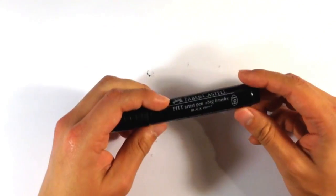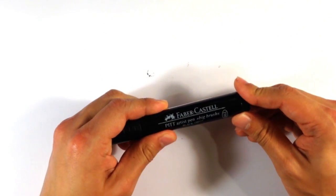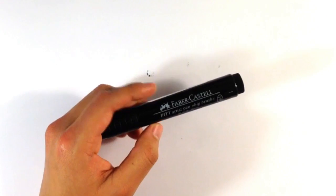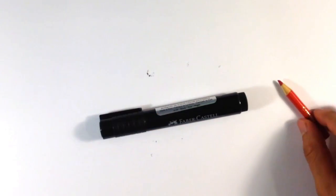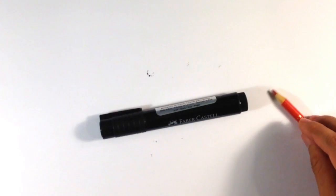I'm going to be using this marker here. This is the PITT Artist Pen. It is a Faber-Castell, and I'm going to be using a few colored pencils as well. They're going to be Crayola brand colored pencils, so that's pretty much it, the box in here.